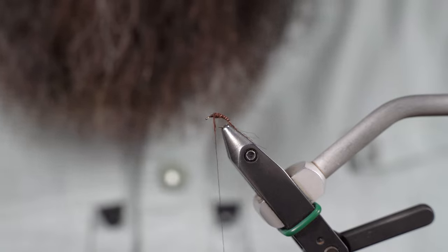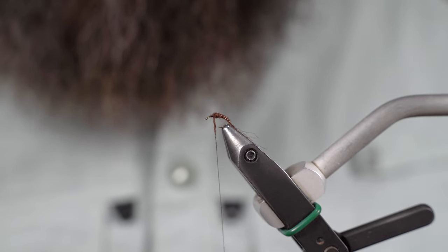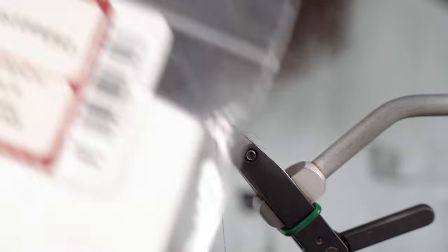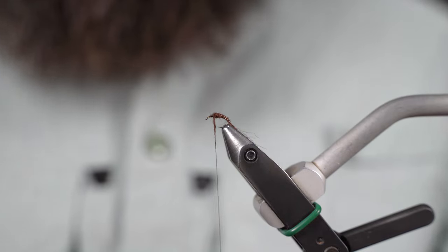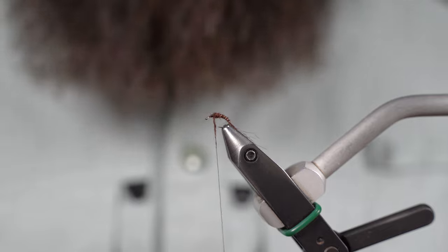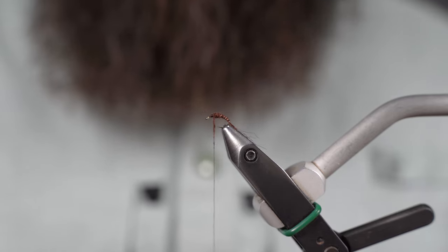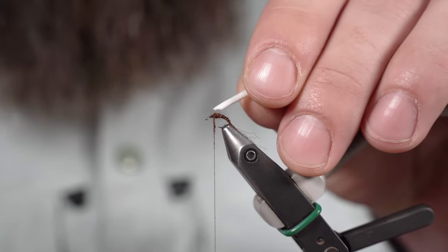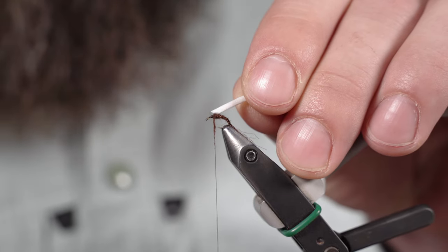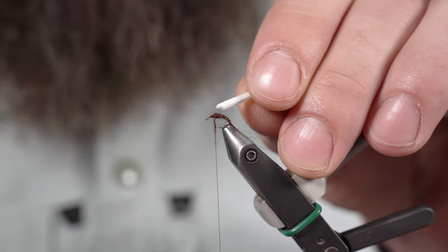And lastly I'm using this fly foam from Wapsi. I'm actually using the 1.5 millimeter. What I did was just trim it into a really slender square piece there.